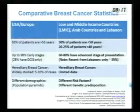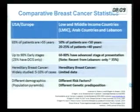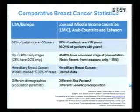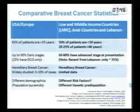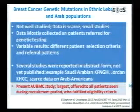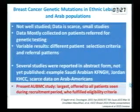Going back to our situation: in low- and middle-income countries, which includes most Arab countries, about 50% of patients are below the age of 50 and even 20% below the age of 40. We have 60 to 80% advanced disease, although this has been changing — new reports show advanced stage at only about 35% because of awareness campaigns. Hereditary breast cancer data is limited and scarce. We only have small studies, most of the time patients referred for genetic testing rather than real prospective studies. Many studies have been reported in abstract form and not yet published, and there is very little data on Arab Americans.